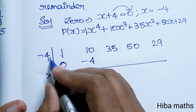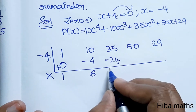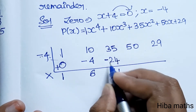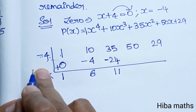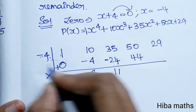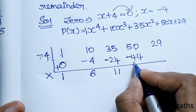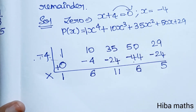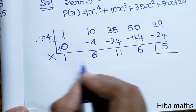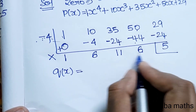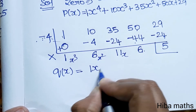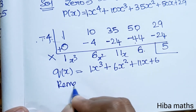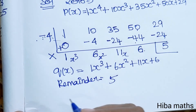Calculating: 44 minus 44 is 50, minus 6; 4's are 24, minus 24; 9 minus 4 is 5, minus 2 is 0. So the remainder is 5. The quotient Q(x) = x³ + 6x² + 11x + 6, and the remainder is 5.